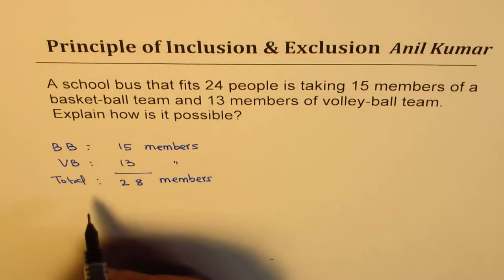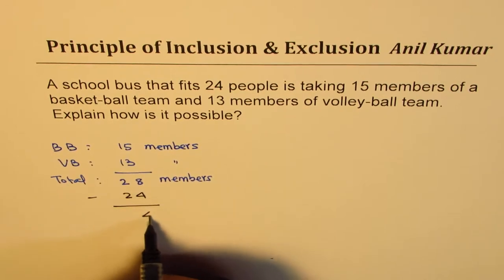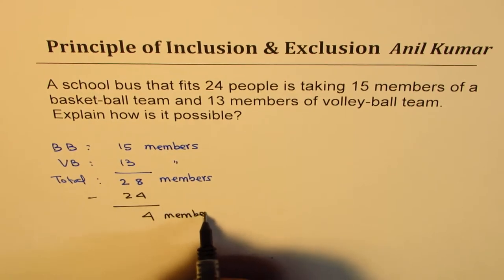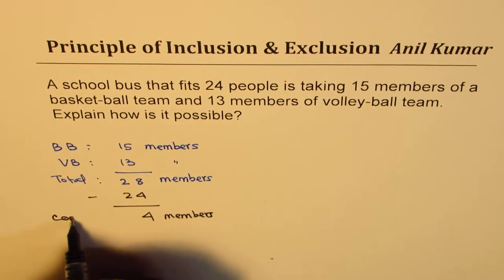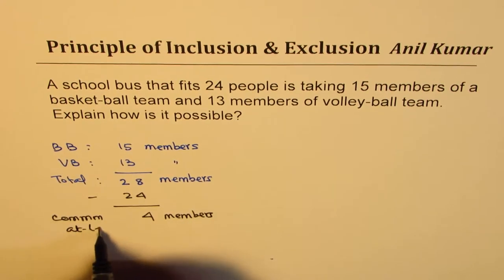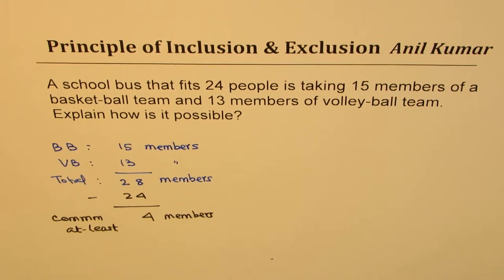A bus can take 24. So if I take away 24, I get 4. So there are at least 4 common members. These are common to both teams — I should say at least 4. There could be more also. If all 24 seats are occupied, then there are definitely 4 common members.